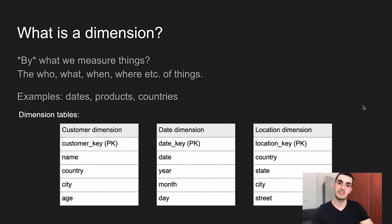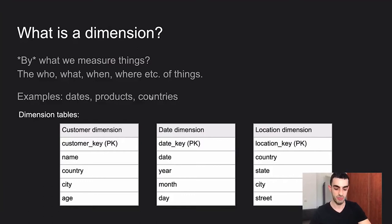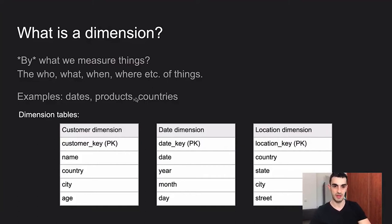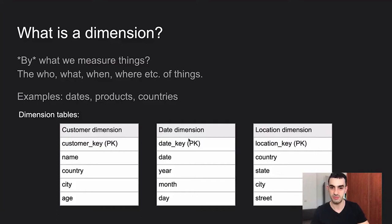Now let's go to the basic definitions. First: what is a dimension? Think of a dimension as the 'by what' we want to measure things — the who, what, when, where. Examples are dates, products, and countries. For instance, we might measure the number of purchases users made by product — how many users bought a MacBook — or by country — how many purchases came from the USA or Germany. Dimensions are things we measure other things by.